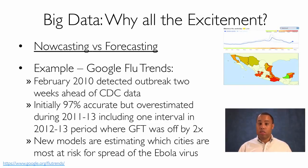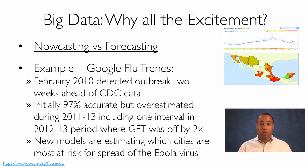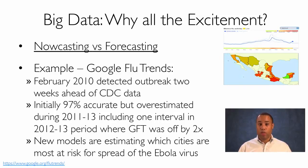Traditionally, we determine there's a flu outbreak when someone falls ill, goes to the doctor, the doctor fills out an incident report and passes it to the local health department, which then passes it up through the county and state hierarchy until it reaches the Centers for Disease Control in Atlanta, Georgia. That process takes about two weeks. With Google Flu Trends, Google started with lots of data — from 2003 to 2008, they looked at about 50 million weekly search queries, from which they derived 45 terms relevant to people searching for flu information when they had the flu.